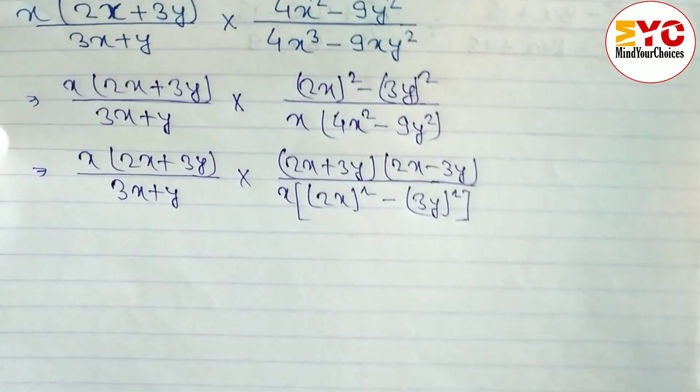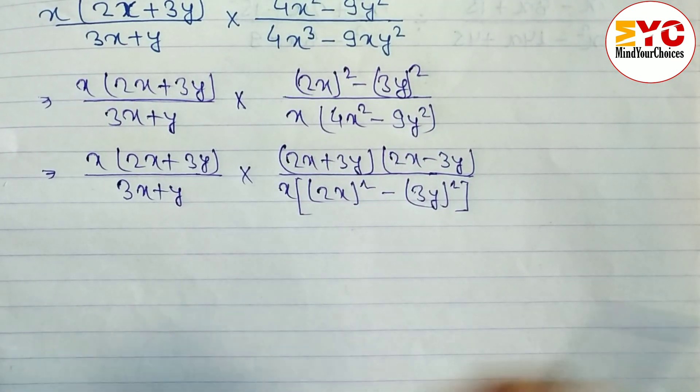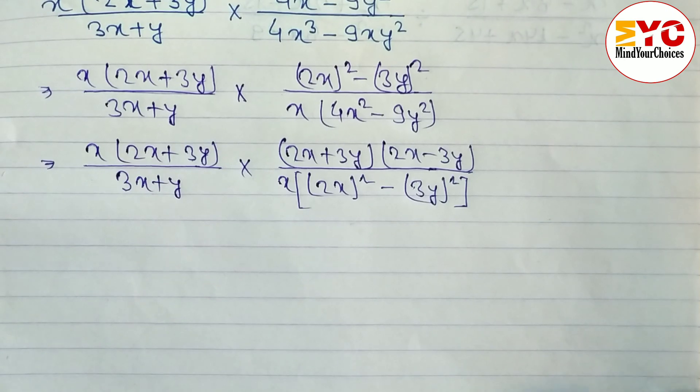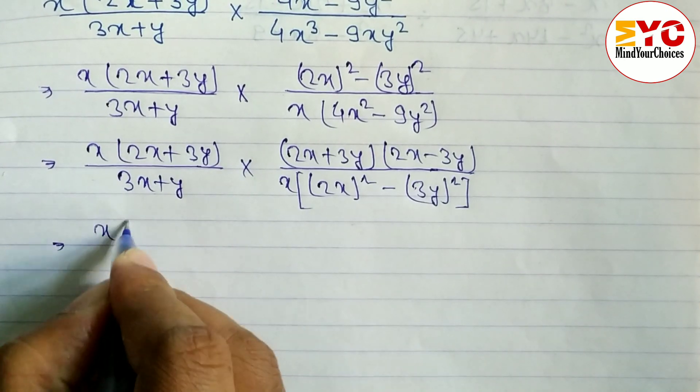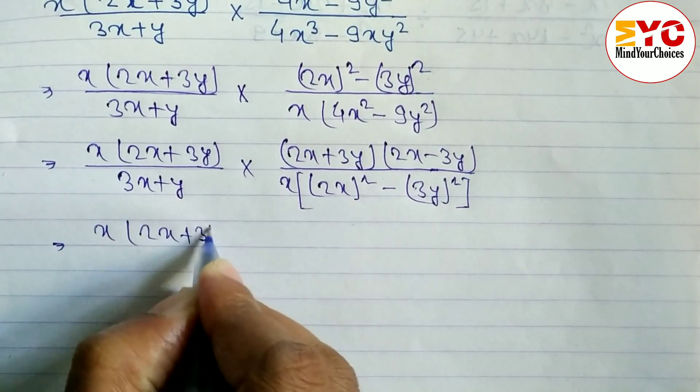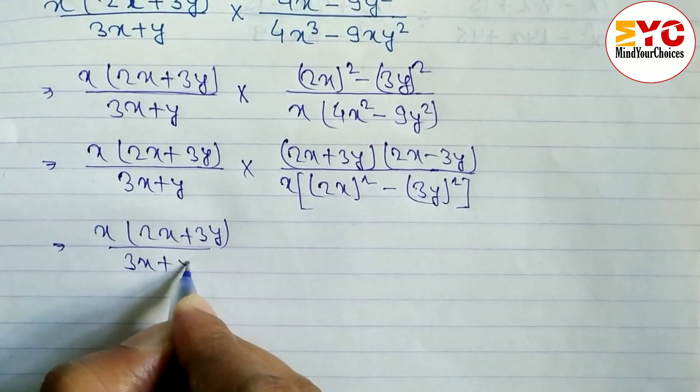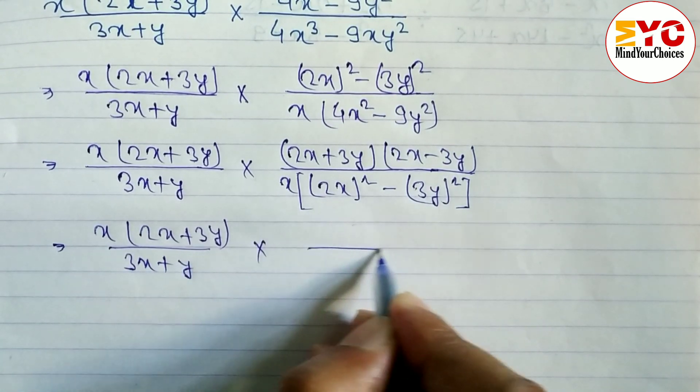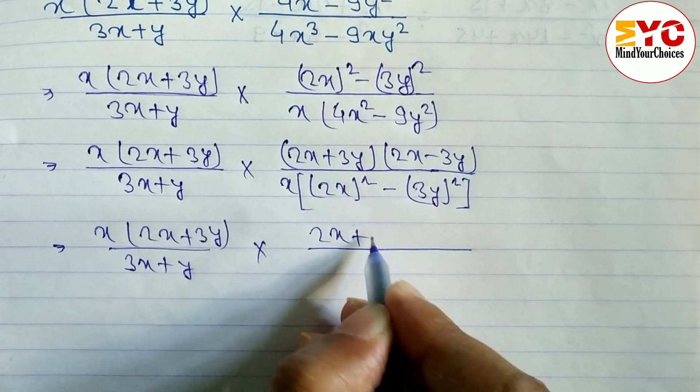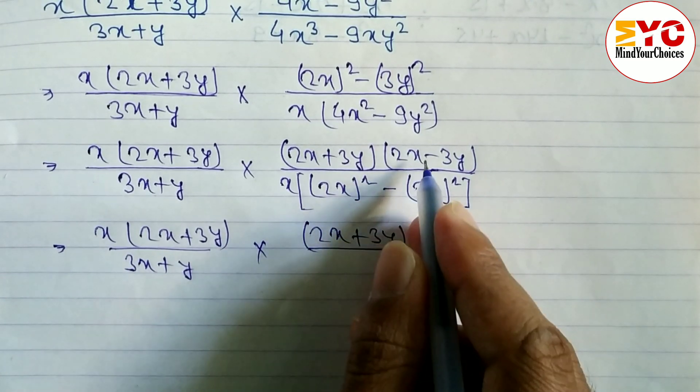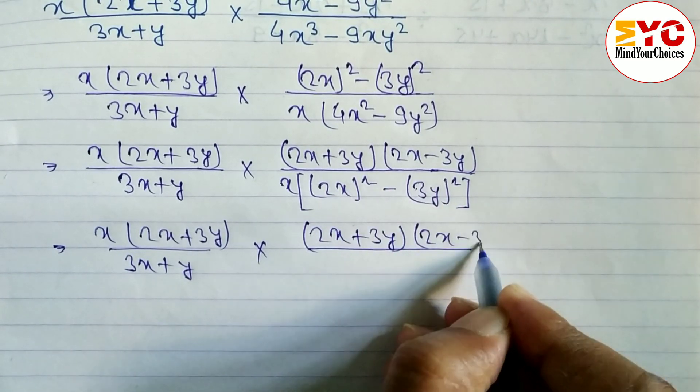x times 2x plus 3y divided by 3x plus y. Here we can write 2x plus 3y same, we have to copy from here, 2x minus 3y, and in denominator, here is x.